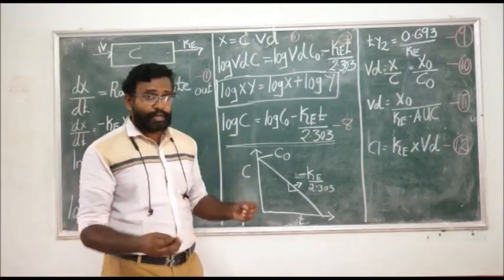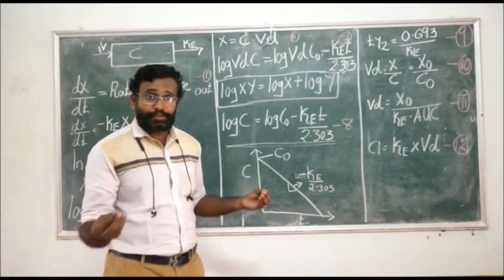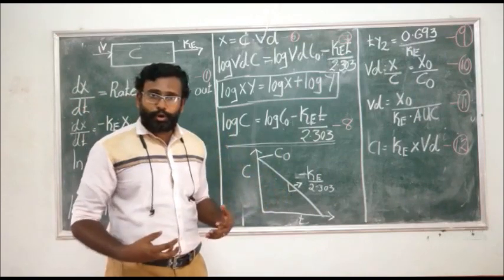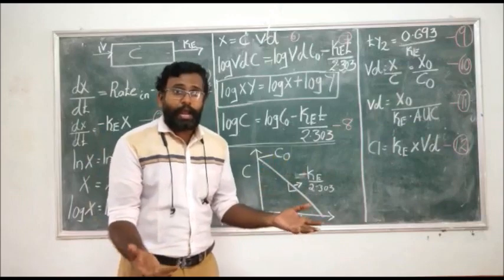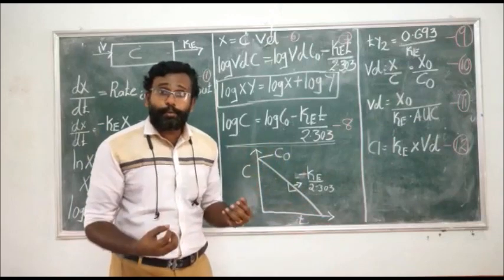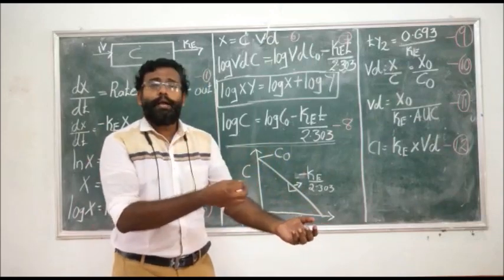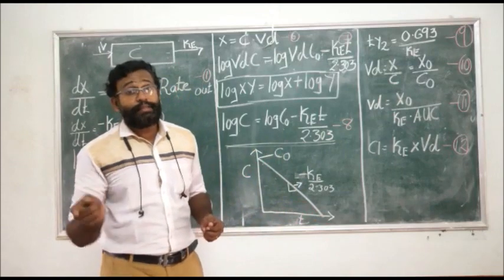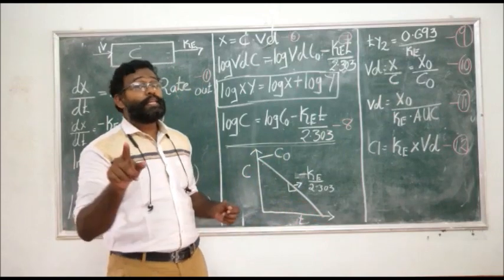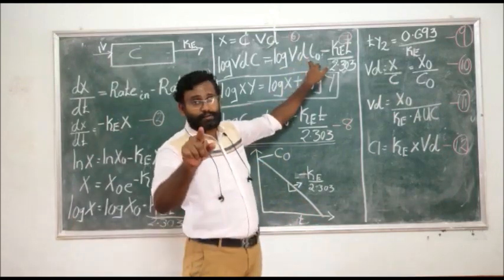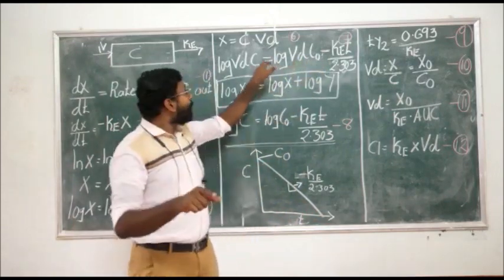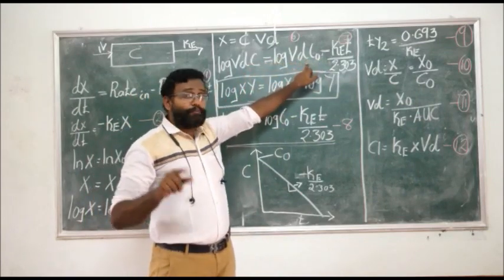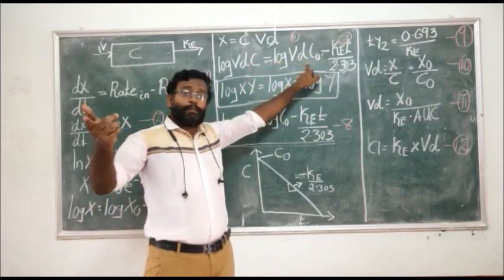So once 500 mg of drug is administered, X0 is 500 mg. After the drug reaches the body and distributes, if you collect a blood sample immediately and measure the concentration, that is C0 — the initial concentration. C0 is what you measure in the blood at time zero. And C is the plasma drug concentration measured after a particular period of time, say after 50 minutes of administration.